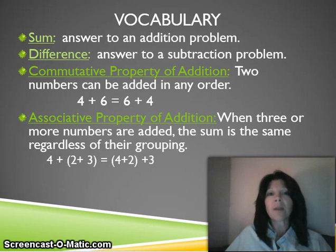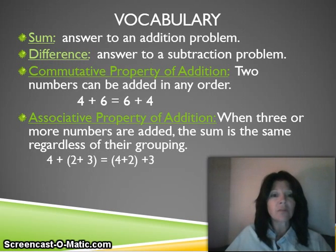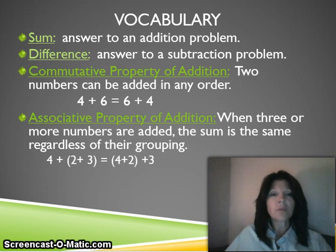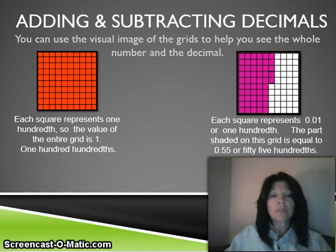Your final vocabulary term for tonight is the associative property of addition, which means that when three or more numbers are added together, the sum is the same regardless of the grouping. The example is that four plus two plus three is the same as four plus two plus three — the answer is going to come out the same. I hope you wrote those down.